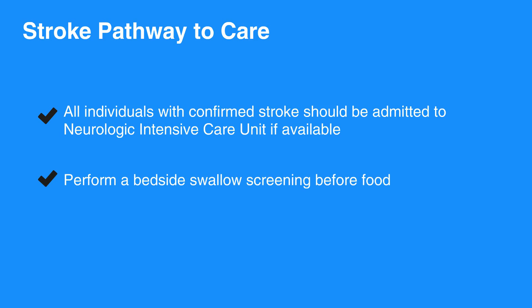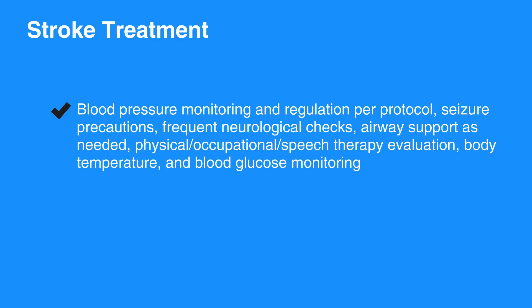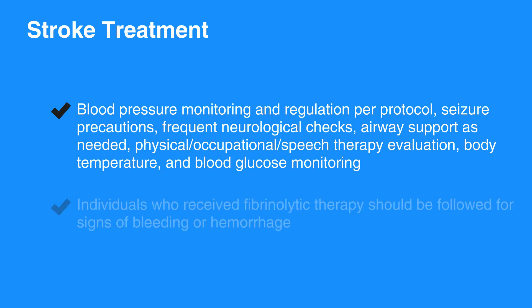All acute stroke individuals are considered NPO on admission. Stroke treatment includes blood pressure monitoring and regulation per protocol, seizure precautions, frequent neurological checks, airway support as needed, physical, occupational, or speech therapy evaluation, body temperature, and blood glucose monitoring. Individuals who receive fibrinolytic therapy should be followed for signs of bleeding or hemorrhage.